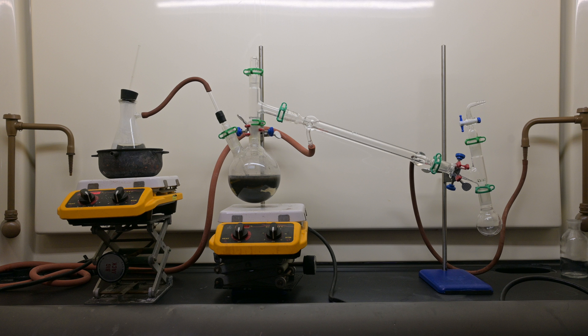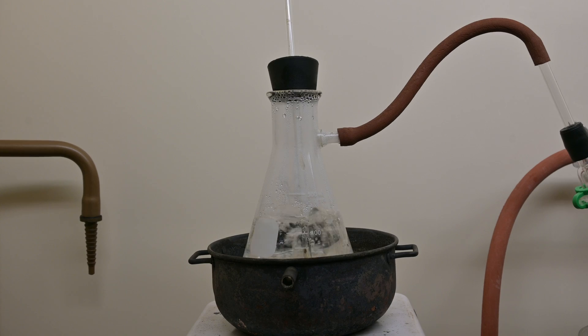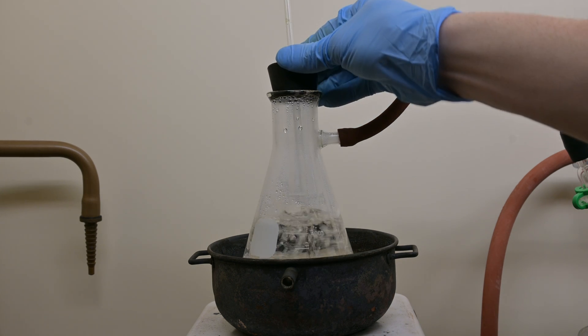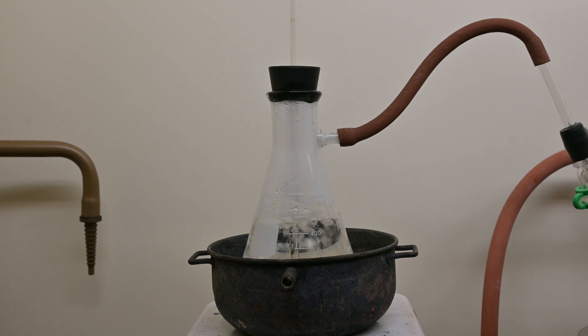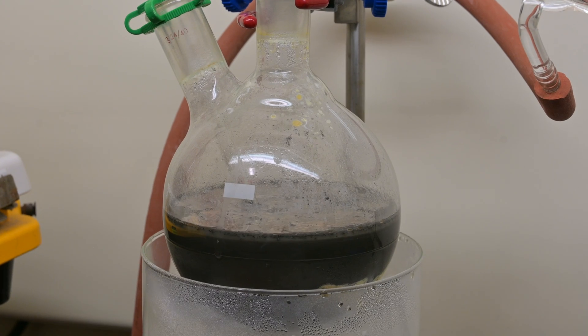To do this, we set up a normal distillation. Where it deviates is we set up a steam generator and connect it to the reaction flask. The steam will pass through the hot flask and carry the aniline over to the condenser.